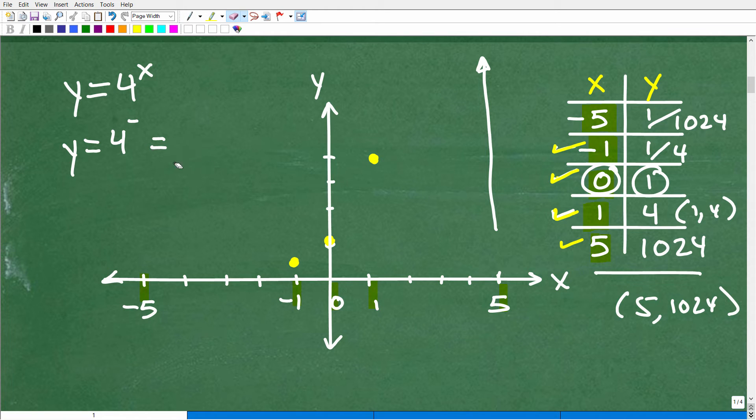Okay, so when x is negative 5, that means we need to find out our y value by plugging in negative 5 for x. That's y is equal to 4 to the negative 5th power. So that's 1 over 4 to the 5th. 4 to the 5th power is 1024. So that's going to be 1 over 1024. This is a super, super small number.